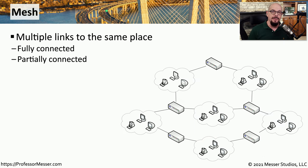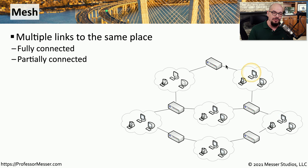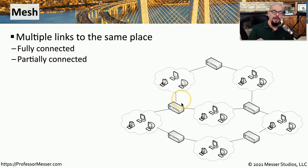Another popular topology, especially in larger networks, is to create a mesh between devices or a mesh between sites. We may have devices that are connected in different locations, and we might want to connect them all together. But instead of having a single connection to a particular site, we may want to create multiple connections to mesh these together. That way, if we do lose any one of these network links, we're able to work around that problem by simply using one of the redundant connections.